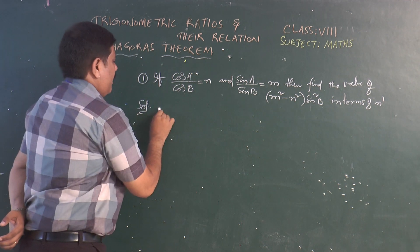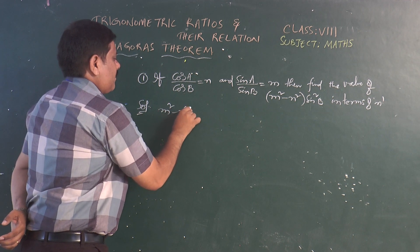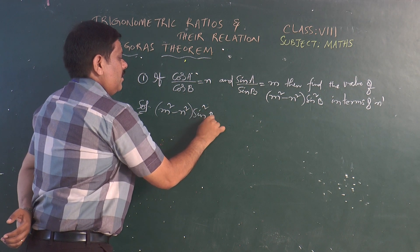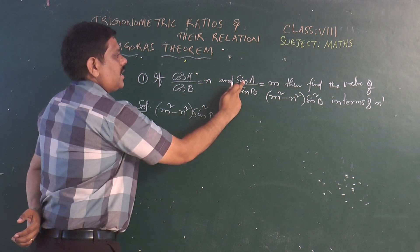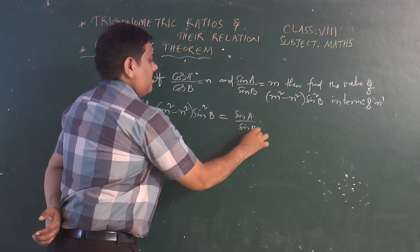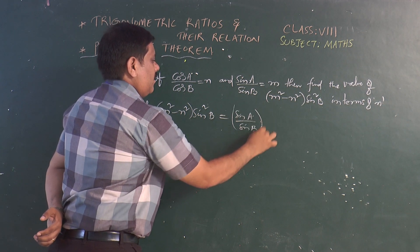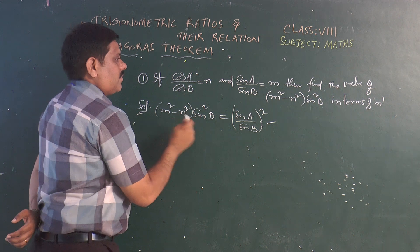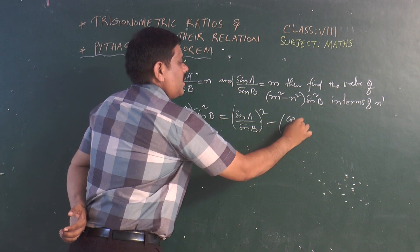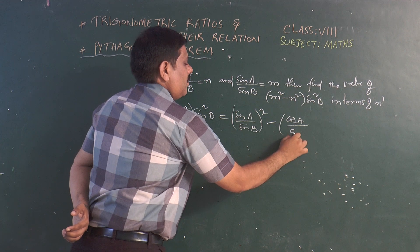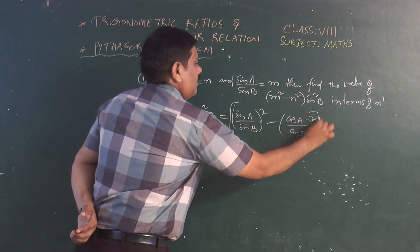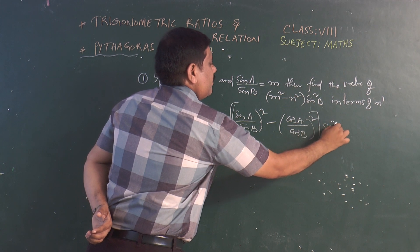If you take m² minus n² times sin² B, that is going to be — m is sin A / sin B — that is (sin A / sin B) whole square minus n² where n² is (cos A / cos B) whole square, times sin² B.